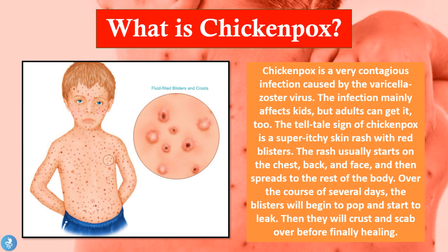So from this definition of chicken pox we get that it's a viral infection which is very common in kids but adults can get it too, and it's caused by the varicella zoster virus. The most prominent symptom of this infection is the super itchy skin rash which develops over the patient's entire body.